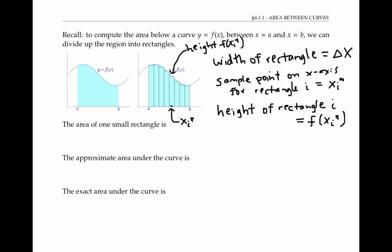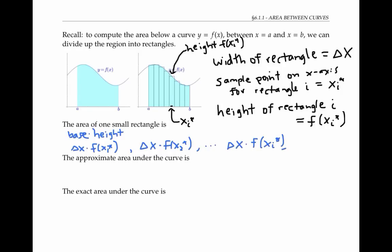From this, you calculated the area of each rectangle. The area of a rectangle is base times height. So the area of the first rectangle is delta x times f of x1 star, the area of the second rectangle is delta x times f of x2 star, and the area of rectangle number i is delta x times f of x sub i star, and so on.